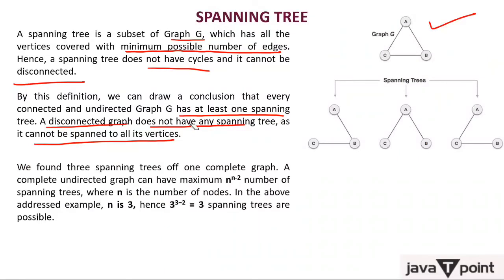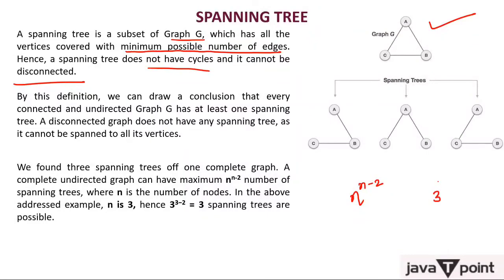This is a very important formula. We found three spanning trees of a complete graph. The formula for the number of spanning trees of a complete graph is n to the power n minus 2. With n = 3 nodes: 3 to the power 1 equals 3, so you can form three spanning trees.